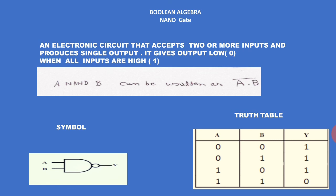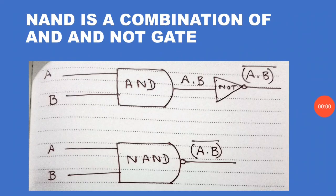Everywhere else the output is one. NAND is a combination of AND and NOT gate. In the first picture, the AND gate output A dot B is sent through the NOT gate, and finally we get the complement of AND — that is NAND. In the second picture, the NAND symbol is shown directly as an AND gate with a bubble, where the bubble represents the NOT gate.